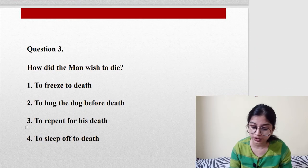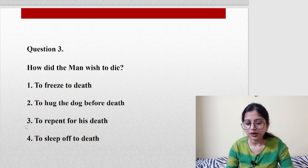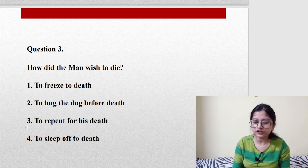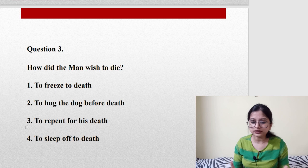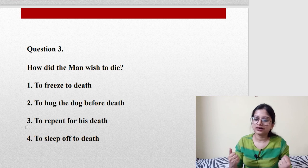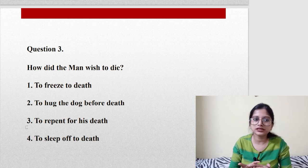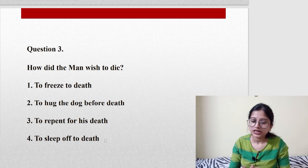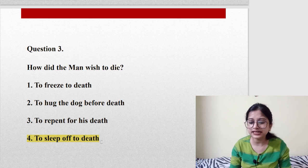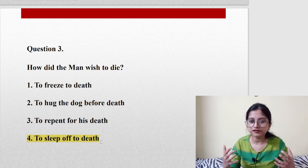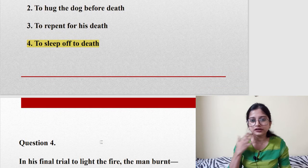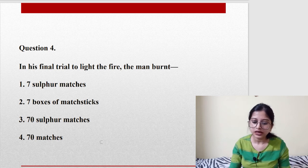Question number three: How did the man wish to die? Obviously this is from 'To Build a Fire.' Did he want to freeze to death, hug the dog before death, repent for his death? No, he was not repenting—he wanted to accept death with dignity. The last option is to sleep off to death. He felt if he could sleep, that would be an easy death, so he wouldn't suffer the pain.